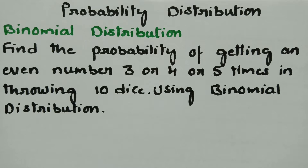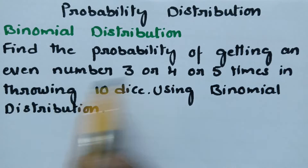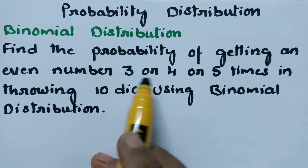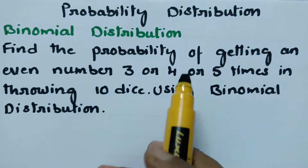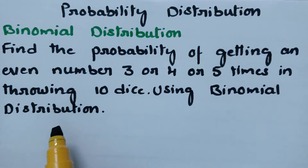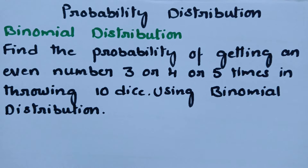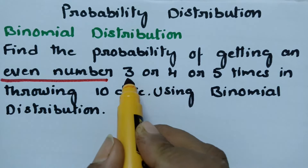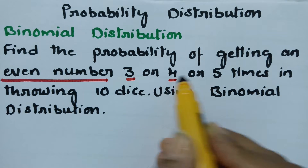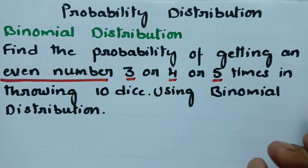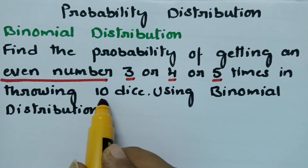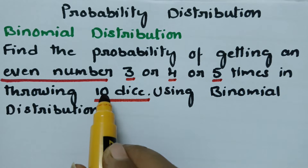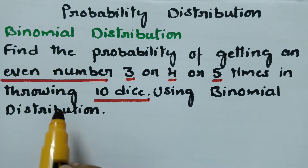Today's problem is from binomial distribution. We have to find the probability of getting an even number three or four or five times in throwing 10 dice using binomial distribution. The question asks for three separate cases at a time, and here n is equal to 10.